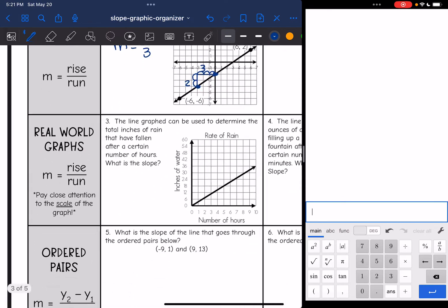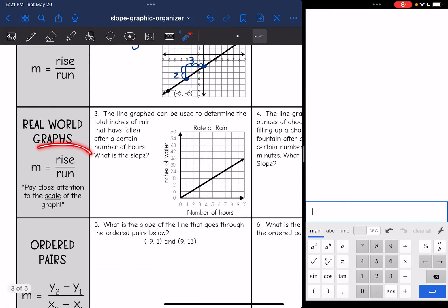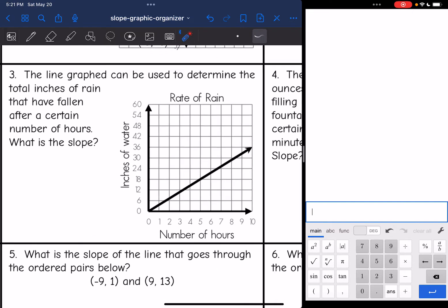Real world graphs, you will also use rise over run to find the slope, especially with real world graphs, with all graphs, but especially with real world graphs. So you need to pay careful attention to the scale of the graph. So let's look at this first one. It says the line graph can be used to determine the total inches of rain that have fallen after a certain number of hours. What is the slope?